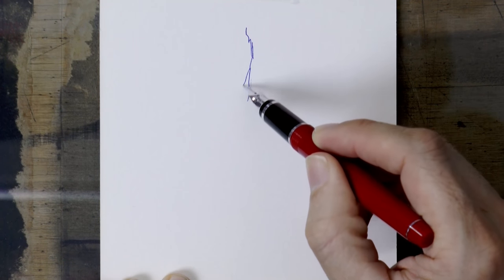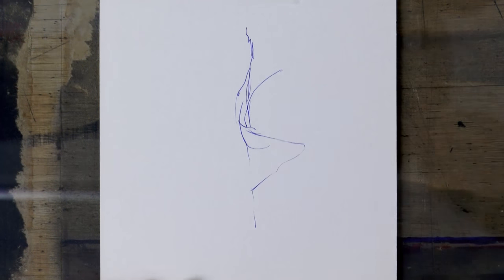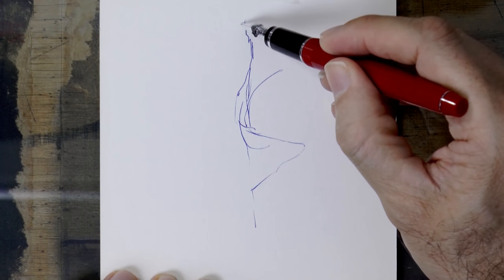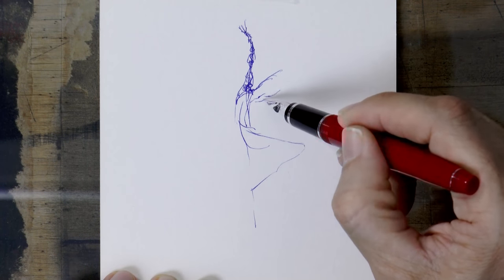This time I will do it a little bit differently and start with some mood lines or action lines. That's a ballerina, and now we doodle on top of them. We construct the shape on top of our lines.